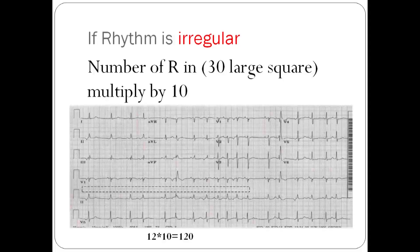What happens if the rhythm is irregular? If it's irregular, you'll need a six-second ECG strip, which consists of 30 large squares. Then you'll count the number of R's and multiply that by 10. So if you look at lead 2, you've got 12 times 10, which is 120 beats per minute.